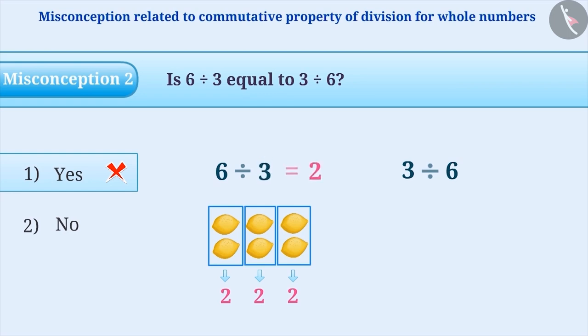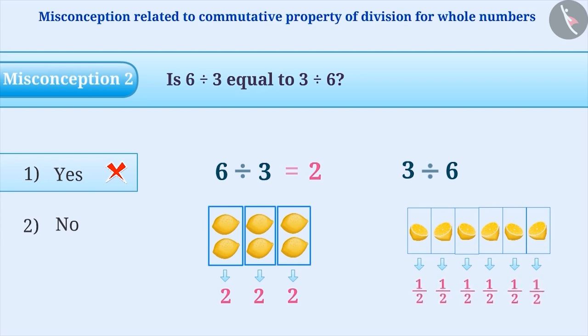Now, let's find the result of 3 divided by 6. If you have 3 lemons and if you wish to divide them into 6 equal parts, then how can you do this? Think for a while. You must cut each lemon in half to make 6 equal parts. Since each part has half lemon, therefore, the result of 3 divided by 6 is half, that is 0.5.